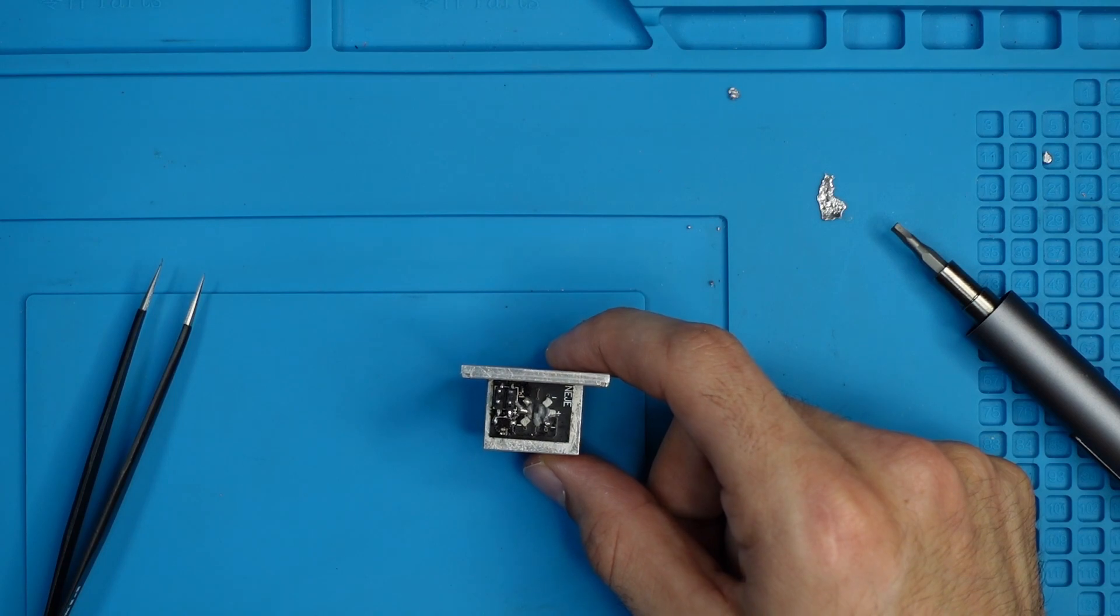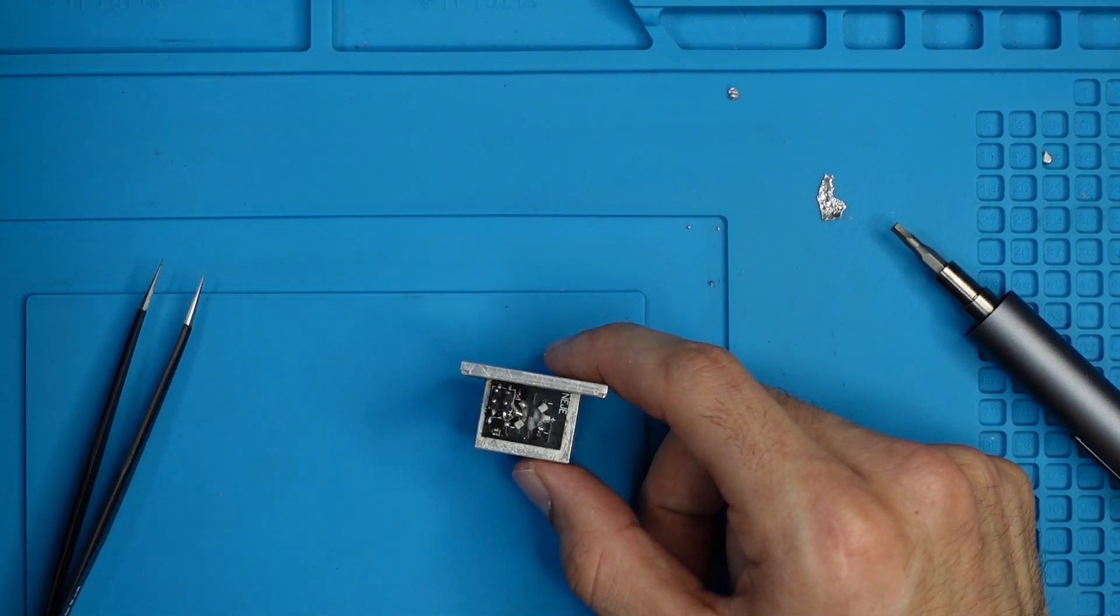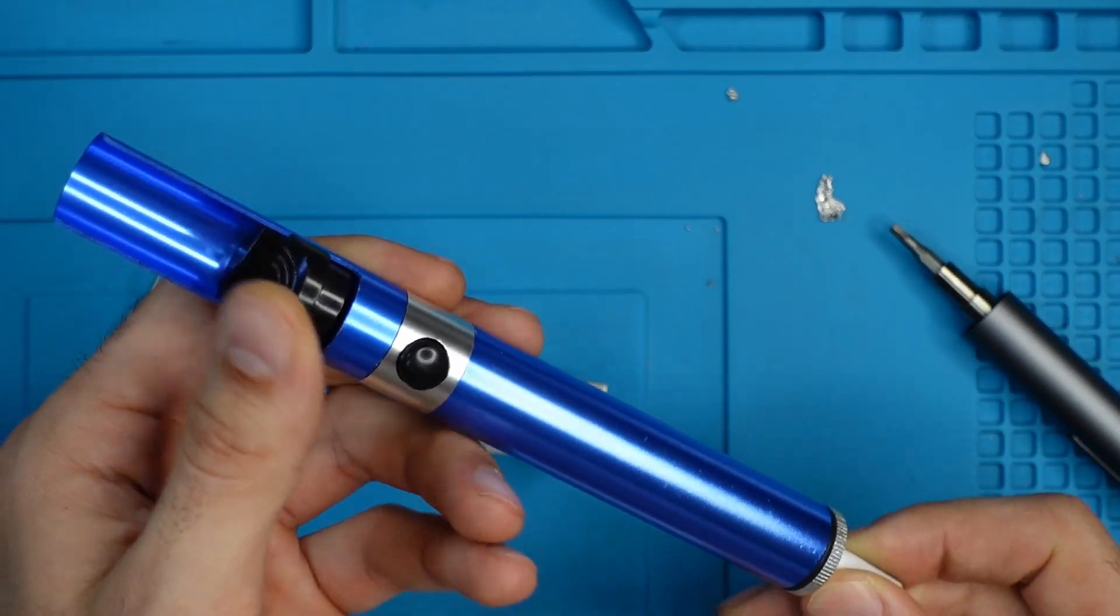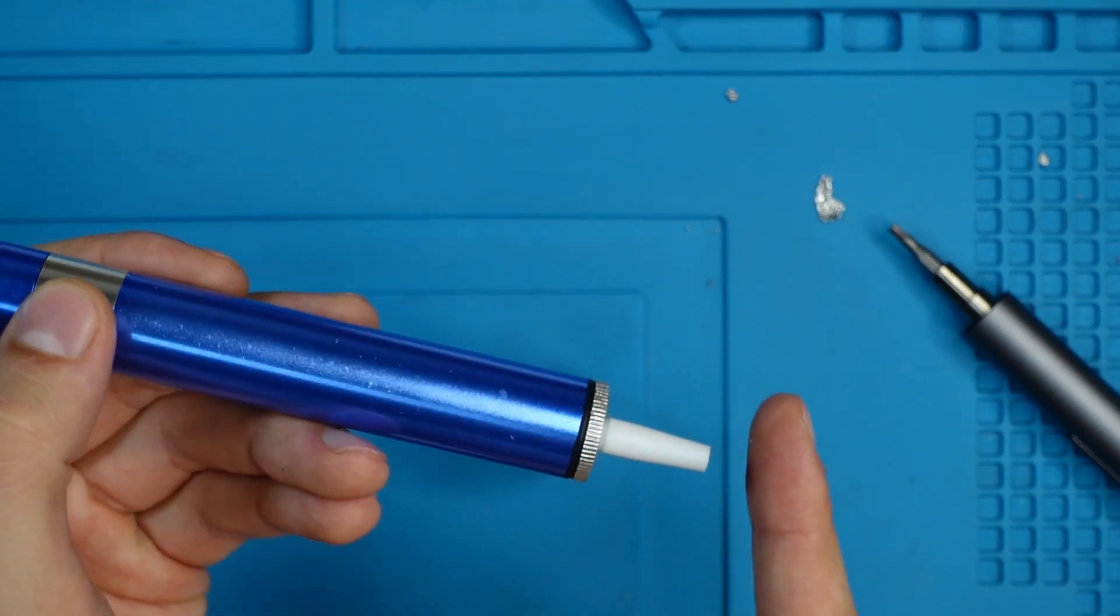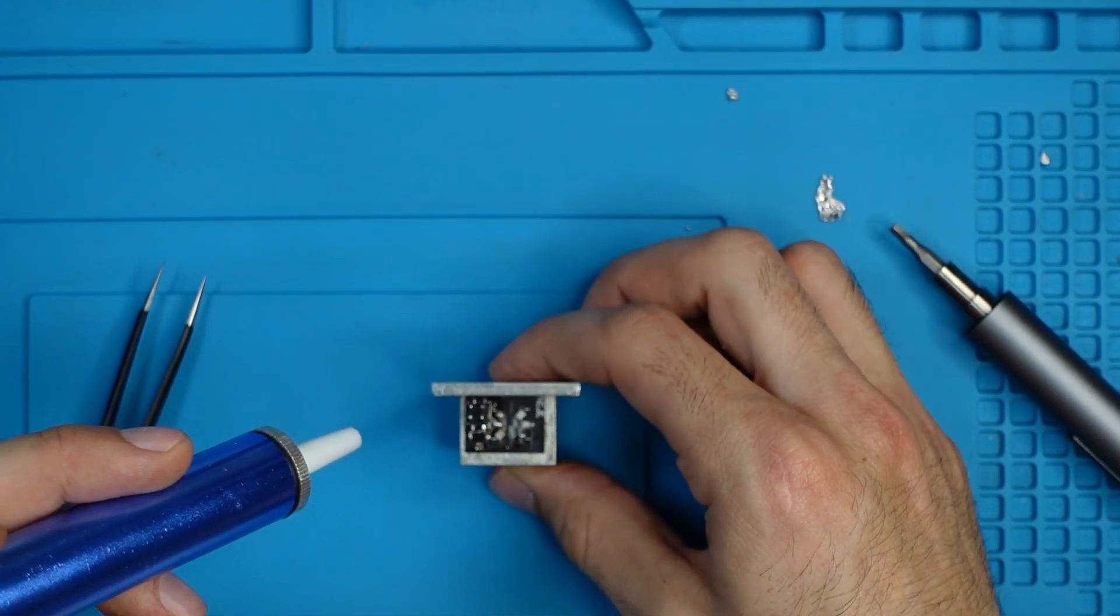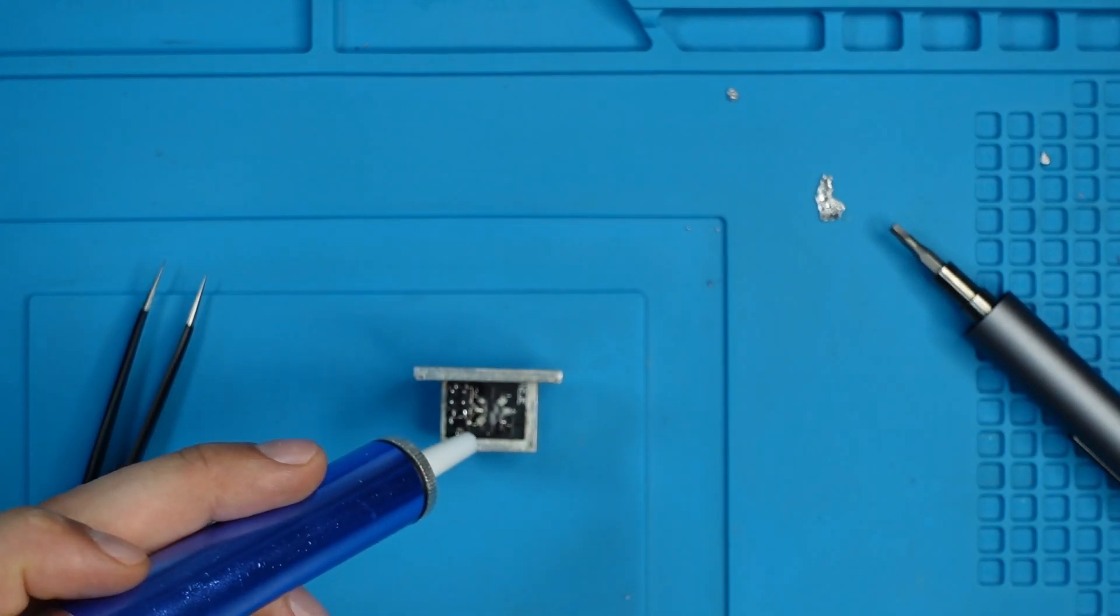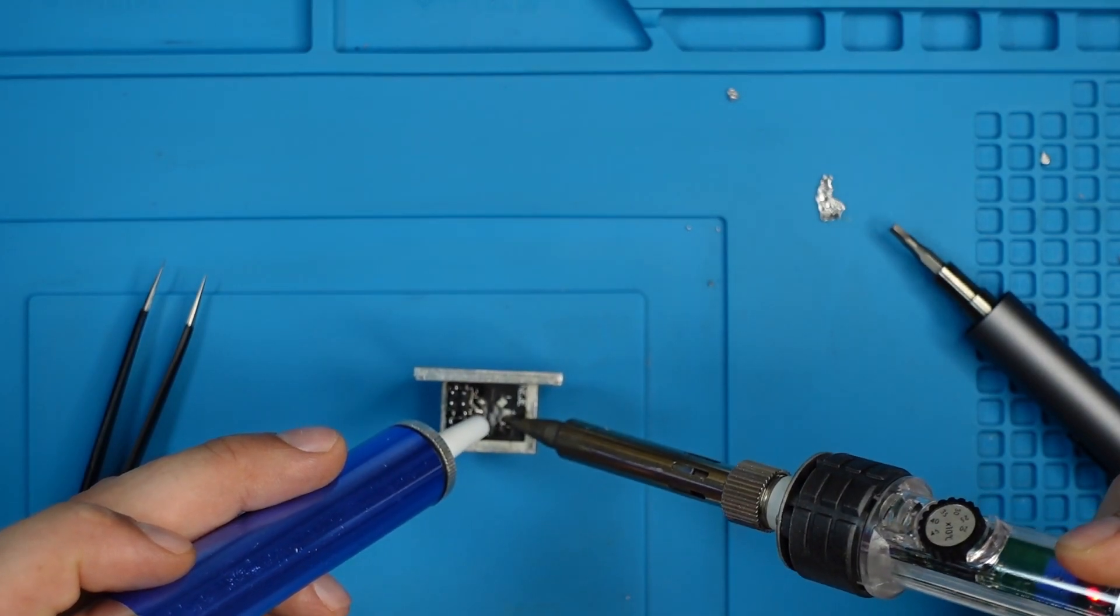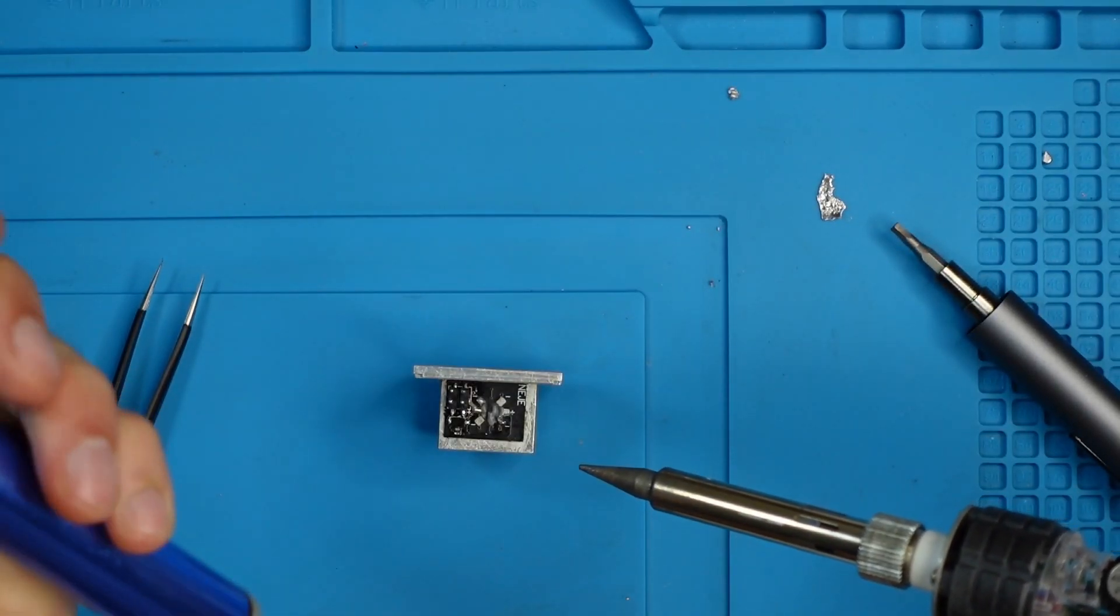What I can recommend you, this is what I use in my project, is to have a vacuum pump. This is a vacuum pump. This is spring-loaded, and it does exactly what it says. It's sucking the tin. What you need to do, try to have something to hold this in place. I will try without for now. What you need to do is to warm up the pin, and then to have this to suck the tin.